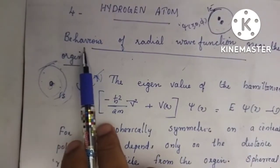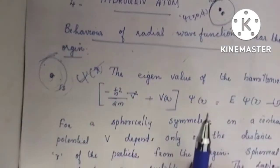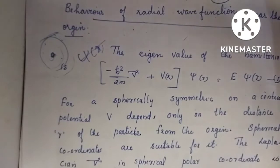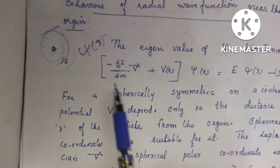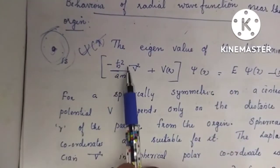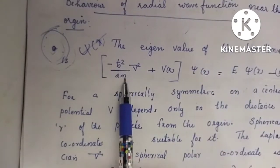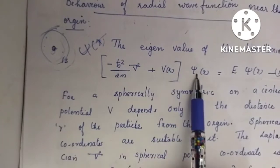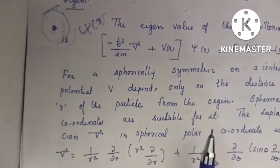Let's see what is the behavior of the radial wave function near the origin. We have a Hamiltonian, and the eigenvalue of the Hamiltonian is: H psi equal to E psi, that is minus h-bar squared divided by 2m times del-squared plus V of r, into psi of r, equal to E psi of r. That is equation number one.